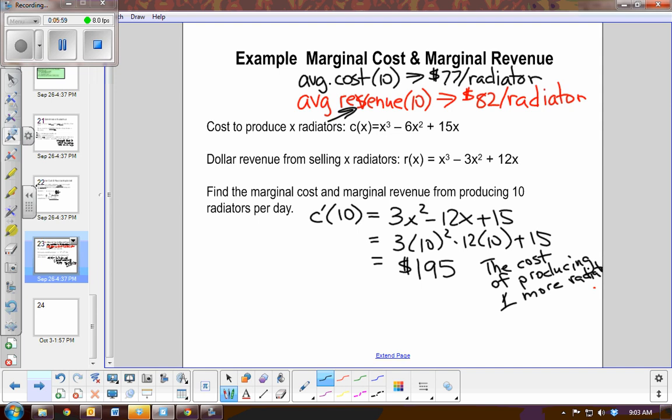Well now, let's see if it makes sense for revenue. So let's find what would be the marginal revenue. Using the revenue function, we have 3x² - 6x + 12. Then if we substitute the value 10 in, we end up with $252. So that is the revenue by making one more radiator a day.